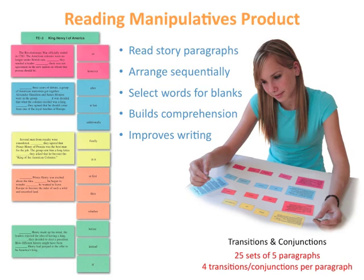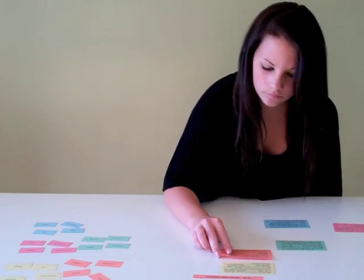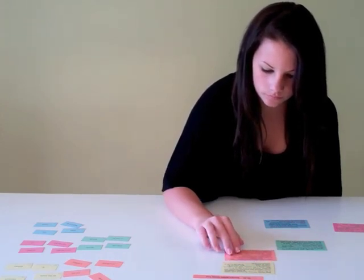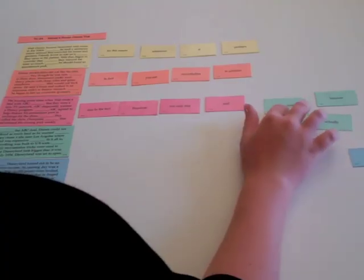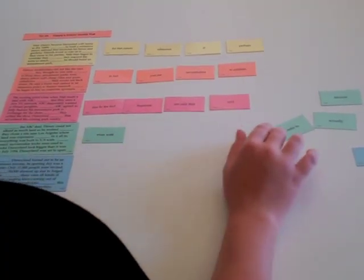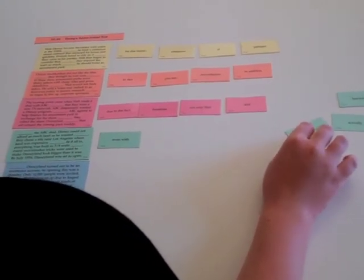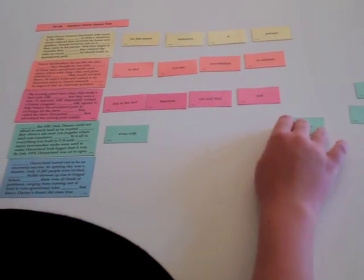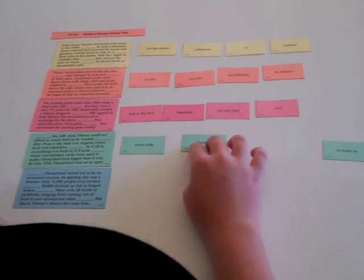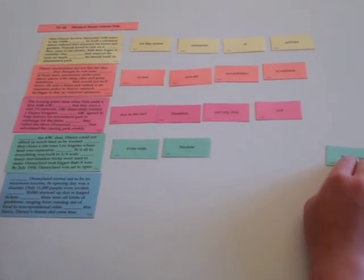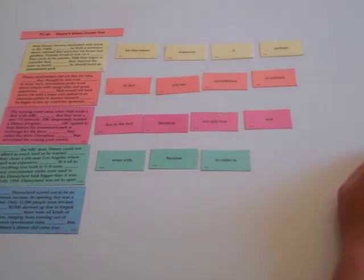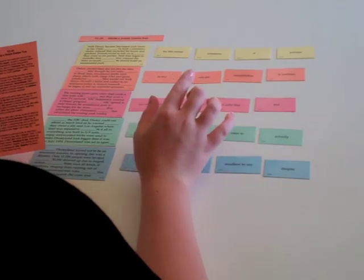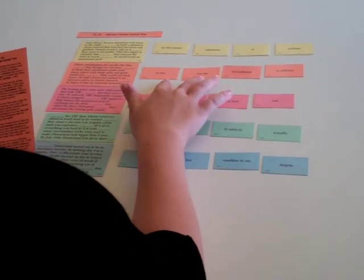Are your students stalled on 'and' and 'then' in their compositions? This material leads them to selection of more appropriate words to join sentences and clauses. First, students read and sequence the five paragraphs. Each paragraph is a different color because they then must select from four words of the same color to fill in the blanks. Content is carefully structured to expand the variety of transitions and conjunctions that they use. This multifaceted material builds comprehension with sequencing and writing with improved transition and conjunction choices. Nonfiction content also teaches students interesting facts.